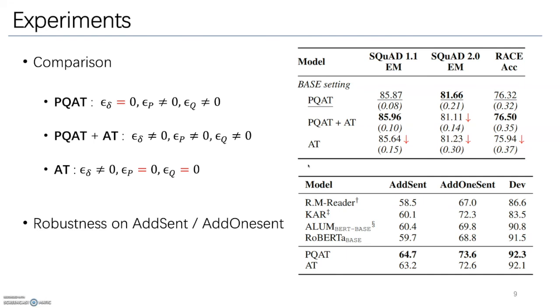Then we enable both PQAT and standard AT by setting all the strengths, epsilon-P, epsilon-Q, and epsilon-delta to non-zero values. However, this is not always beneficial. The performance gets slightly better on SQuAD 1 and RACE, but gets worse on SQuAD 2.